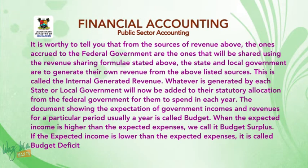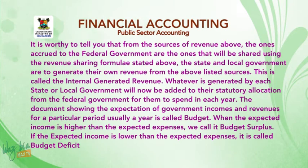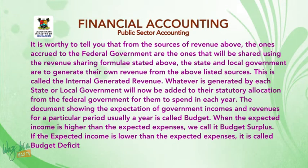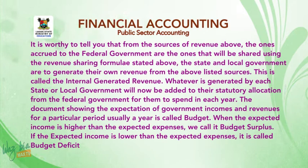The document showing the expectation of government incomes and revenues for a particular period, usually a year, is called a budget. When the expected income is higher than the expected expenses, we call it a budget surplus. If the expected income is lower than the expected expenses, it is called a budget deficit. When we come back, we will attempt to solve a question on allocation of funds to government tiers.